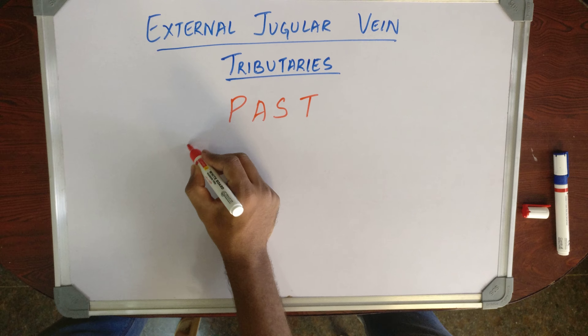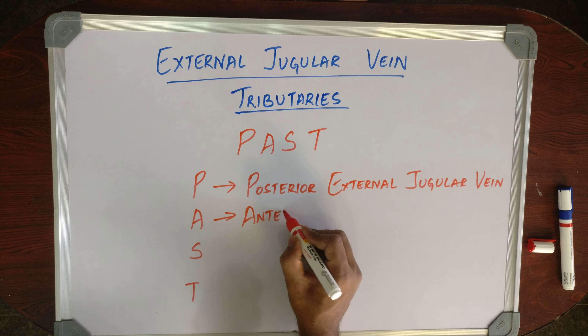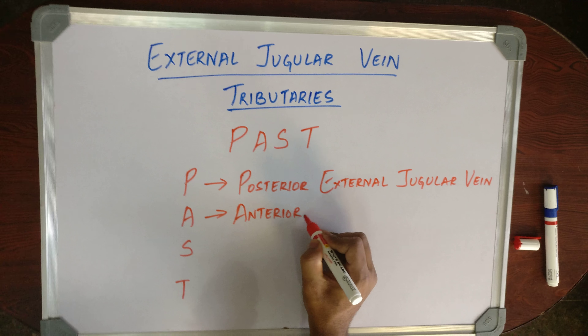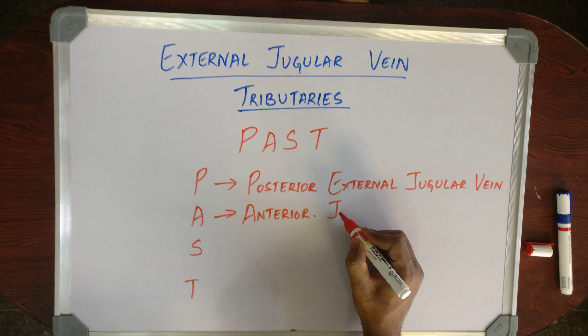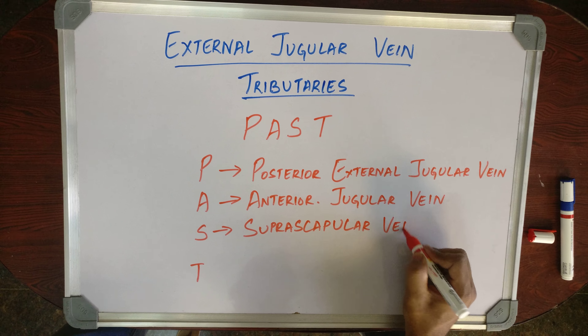A stands for Anterior Jugular vein. A stands for Suprascapular vein.